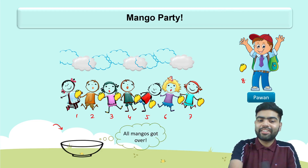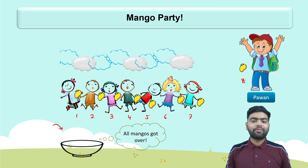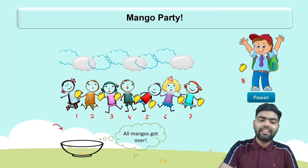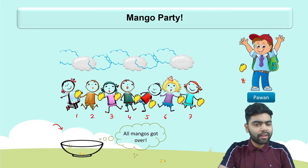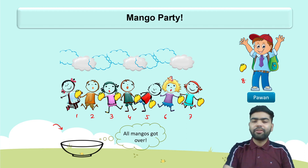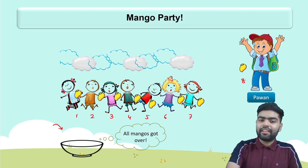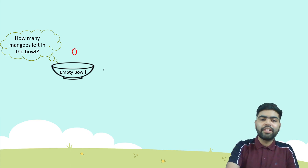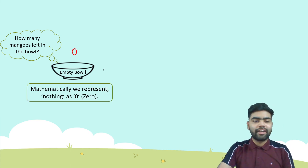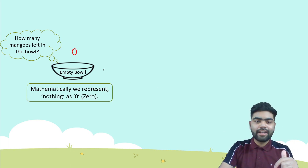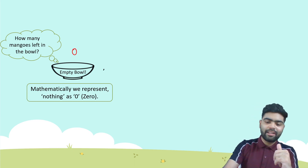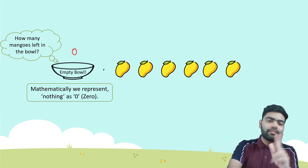Now how many mangoes are left in the bowl? All the mangoes are gone — there are no more mangoes left. So how do you represent 'no mangoes' with a number? That number is zero. Mathematically, we represent nothing as zero.